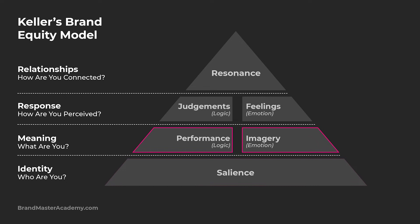Level two is Meaning — what are you? This is all about communicating what value you offer in the marketplace, why you're different, and why your audience should choose your brand over competitors. You can use performance and imagery within this level. Performance is about demonstrating how your brand fits the needs of your audience, and imagery is about how the brand aligns with your customer through social and psychological levels — what they believe and what your brand stands for.